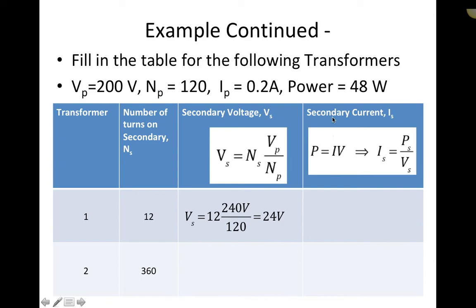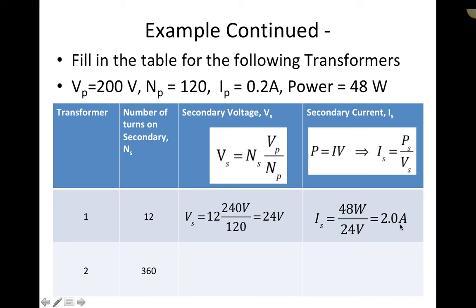To find the current in the secondary, we use the fact that the power is already known. The power in the primary was 48 watts, and the power in the secondary is also 48 watts. Rearranging power equals current times voltage, the current equals power divided by voltage. So the secondary current with 12 turns is 48 watts divided by 24 volts, which gives 2 amps. This is a step-down transformer: the voltage drops from 240 to 24, and as the voltage goes down, the current goes up — because the power must stay the same.